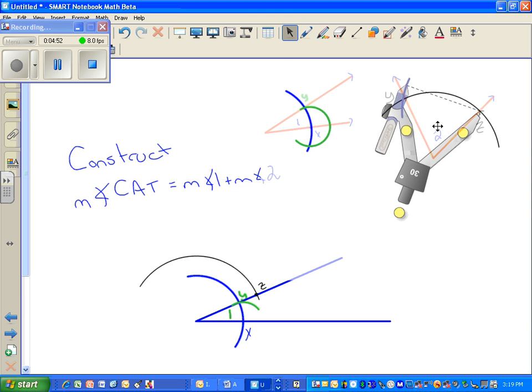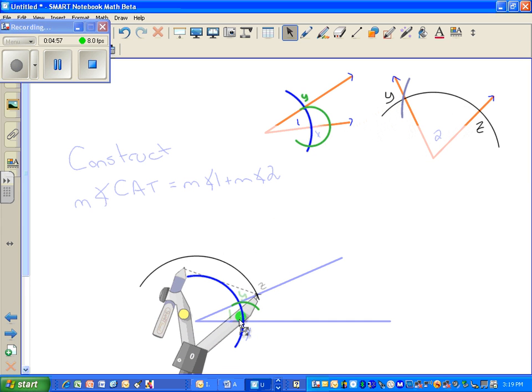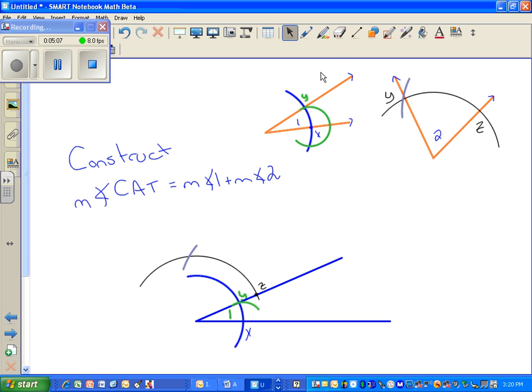I'm going to mark that. Now I'm going to take my compass, keeping my setting the same, I'm going to go pivot on Z. And I'm going to mark that distance.